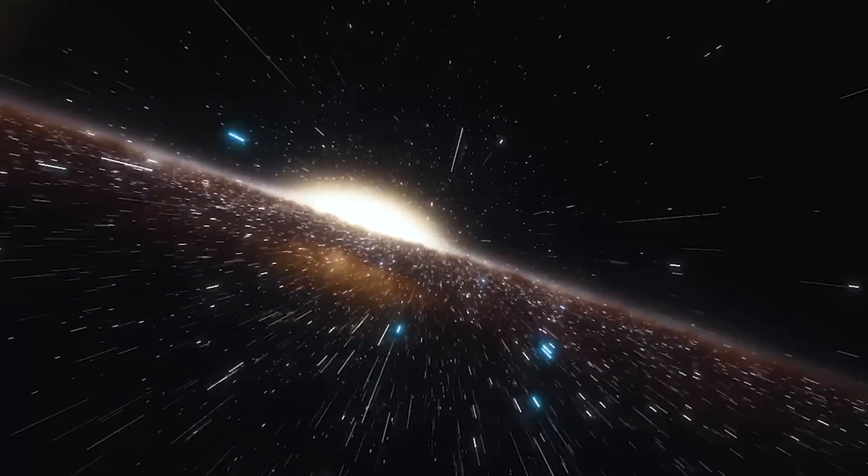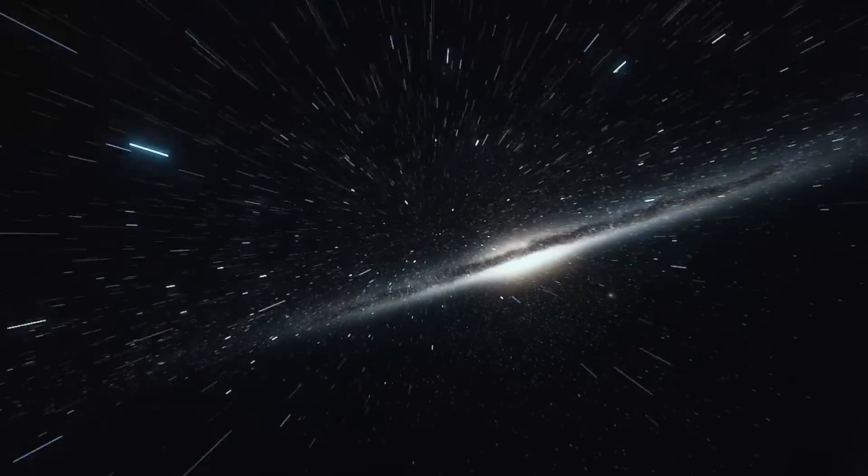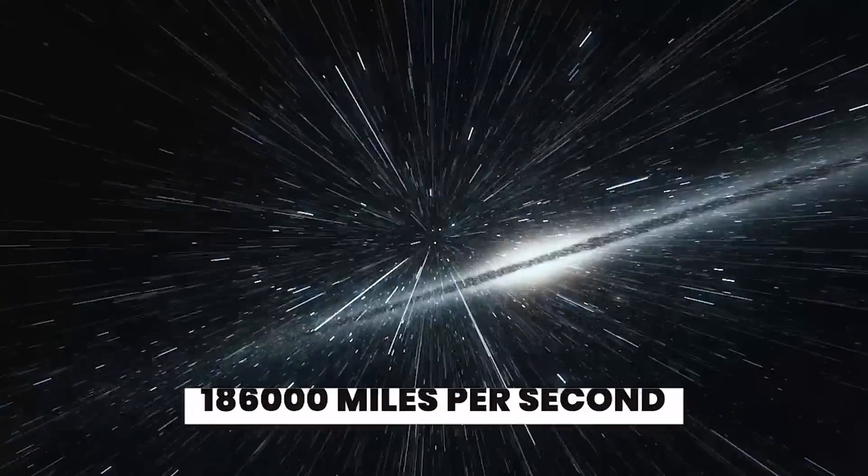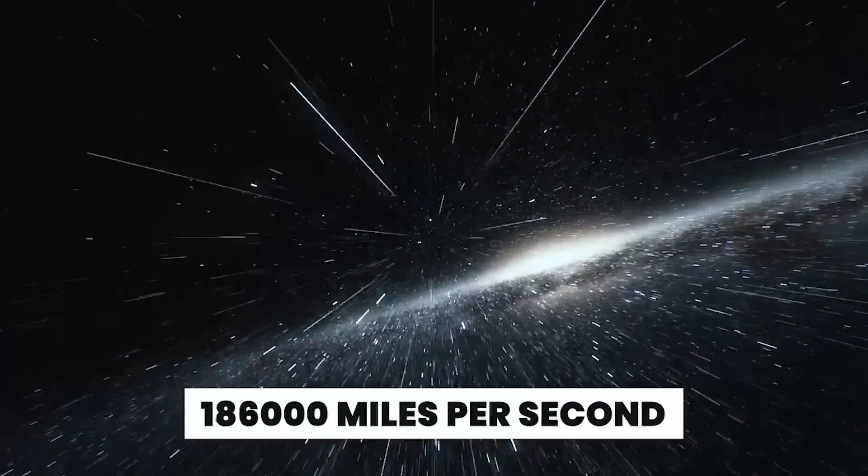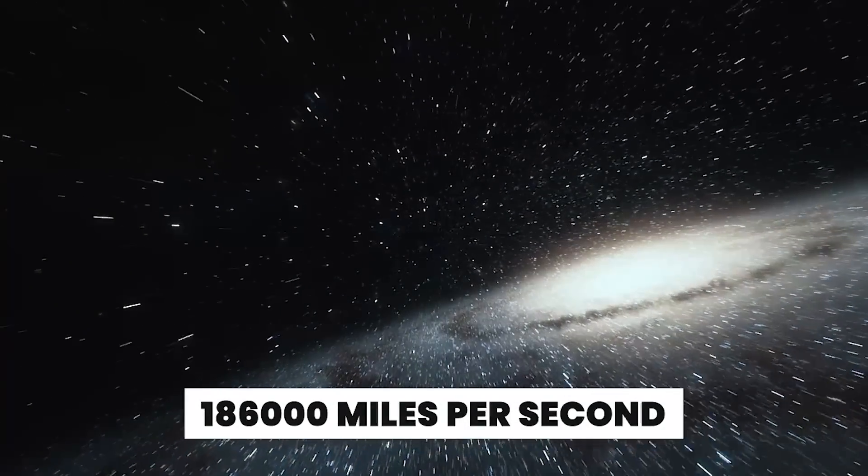So please fasten your seat belts because now we are going deep in the interstellar. The speed of light is a paradoxical thing. At the speed of 186,000 miles per second, light travels in the universe. This speed is so fast that whenever we look at the light, we can only judge its position or momentum correctly.